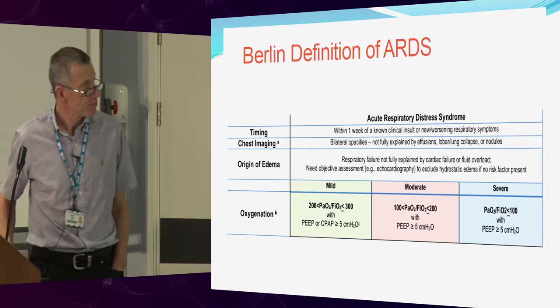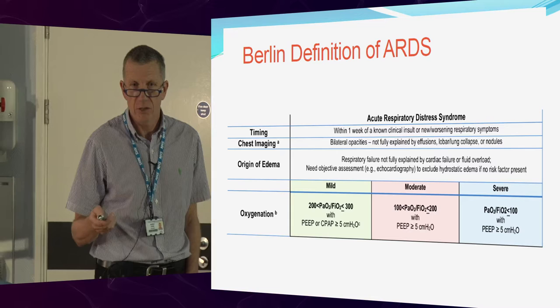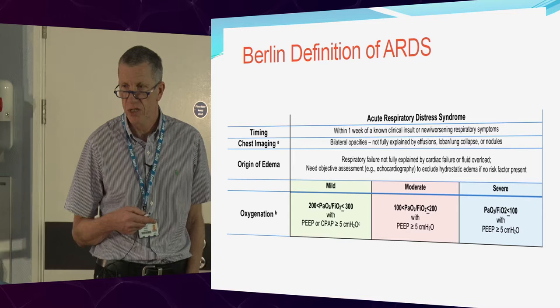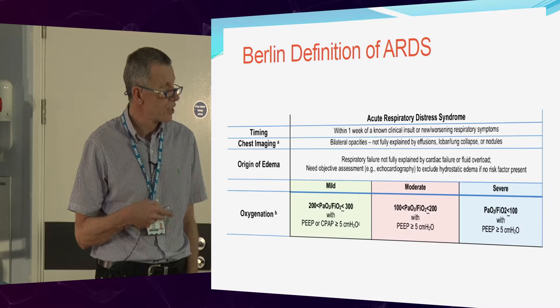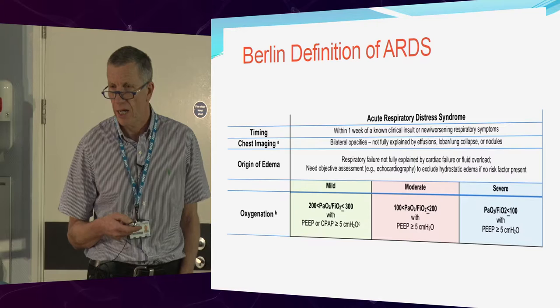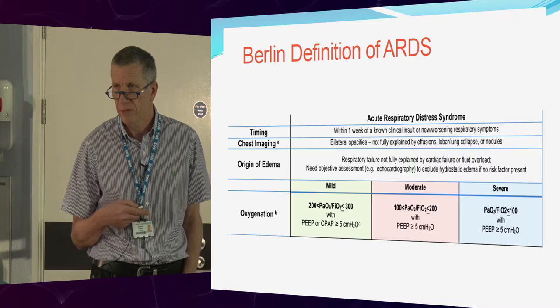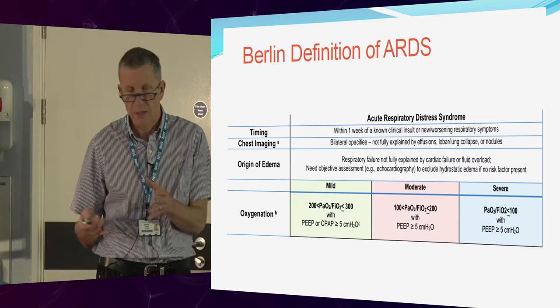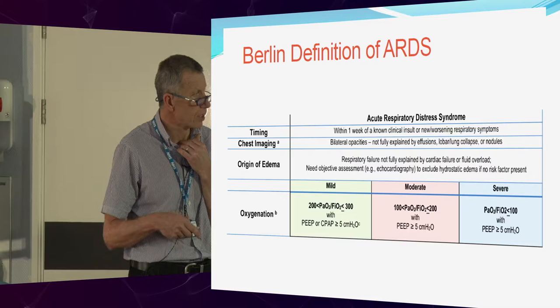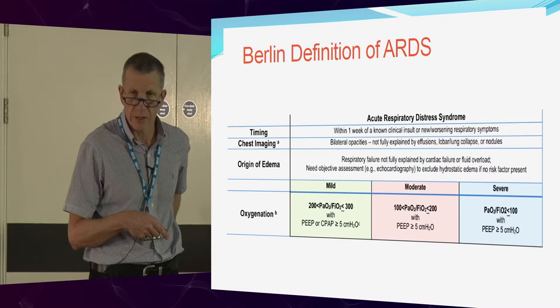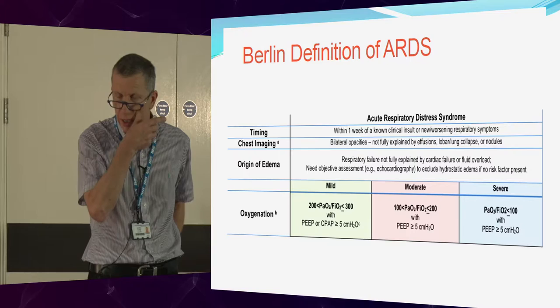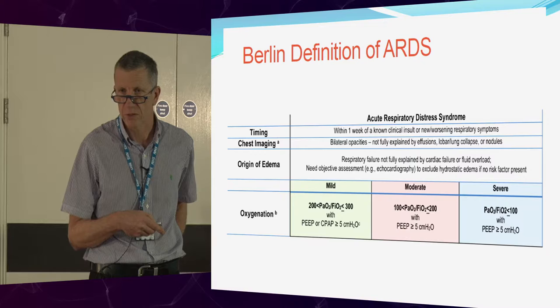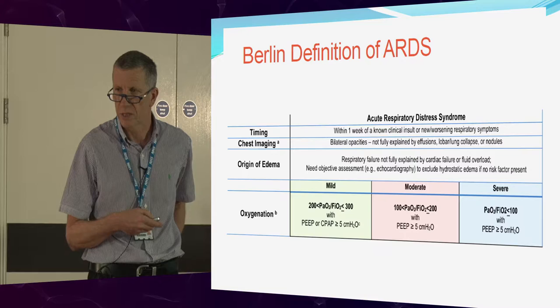The new definitions of ARDS have changed from the original consensus definitions. These definitions are useful for putting patients into trials and give you an idea about who you can label as ARDS, but I don't find them that useful clinically. We used to talk about mild ARDS as acute lung injury and severe hypoxia as ARDS. These days we divide it into mild, moderate and severe depending on your PaO2 to FiO2 ratio — looking at a PaO2 on a blood gas and relating it to the amount of oxygen you're giving your patient.